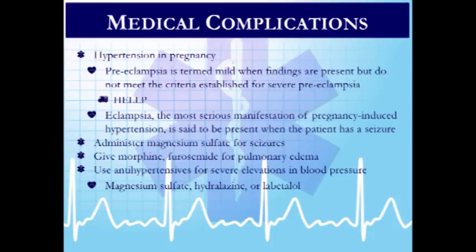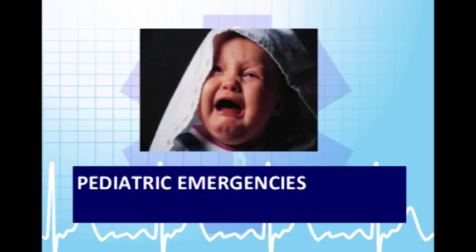For pregnancy hypertension: preeclampsia involves findings of elevated blood pressure, pitting edema, and protein in the urine. Once the patient has a seizure, they are fully eclamptic. Management may include a magnesium sulfate infusion for seizures, morphine, pulmonary edema medications, and antihypertensives for severe elevations.